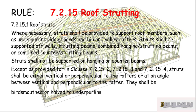Struts shall not be supported on hanging or counter beams — they need to be a combined hanging or counter beam. Except as provided for in clauses 7.2.15.2, 7.2.15.3, and 7.2.15.4, struts shall either be vertical or perpendicular to the rafters, or at an angle between vertical and perpendicular to the rafter. They shall be bird's mouth or halved onto the underpurlins — they just can't butt up underneath them.